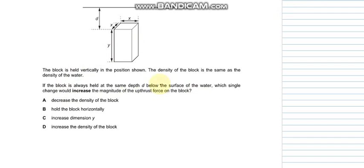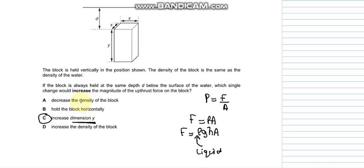Pressure is force over area, and force is pressure into area. The force would be written as rho g h into area. So the upthrust force would increase if these factors are changed. Rho density is the density of liquid, so increasing the dimension y would increase the magnitude of the upthrust force. Density of the block is not relevant, and holding the block horizontally would not increase or decrease the magnitude. So C is the appropriate answer.